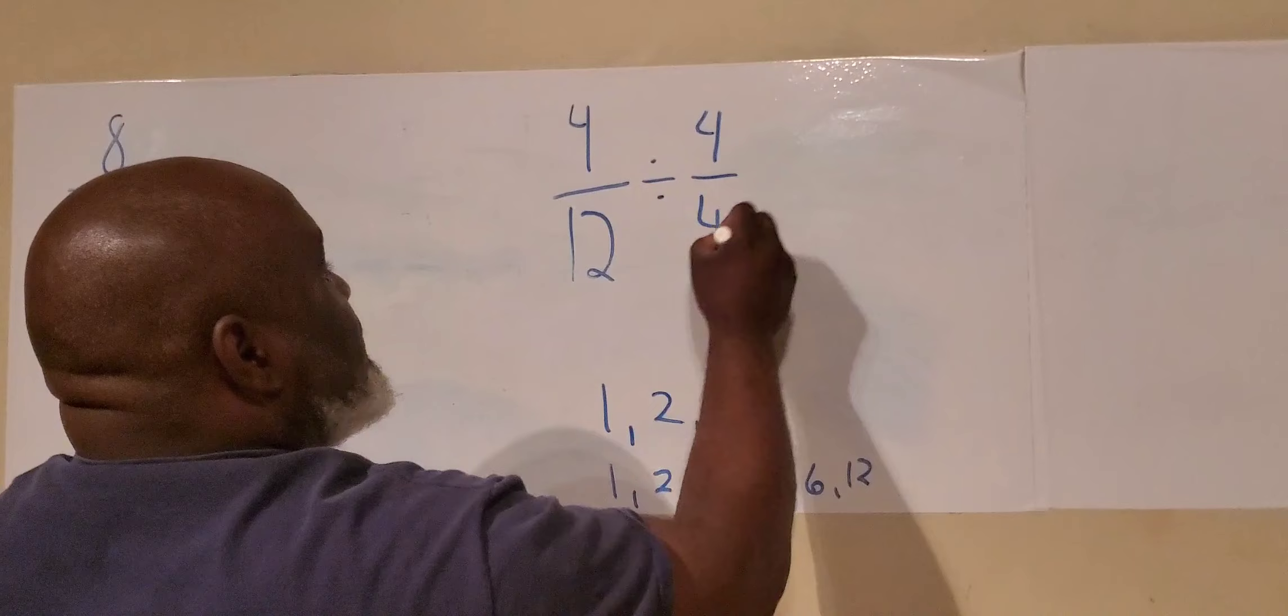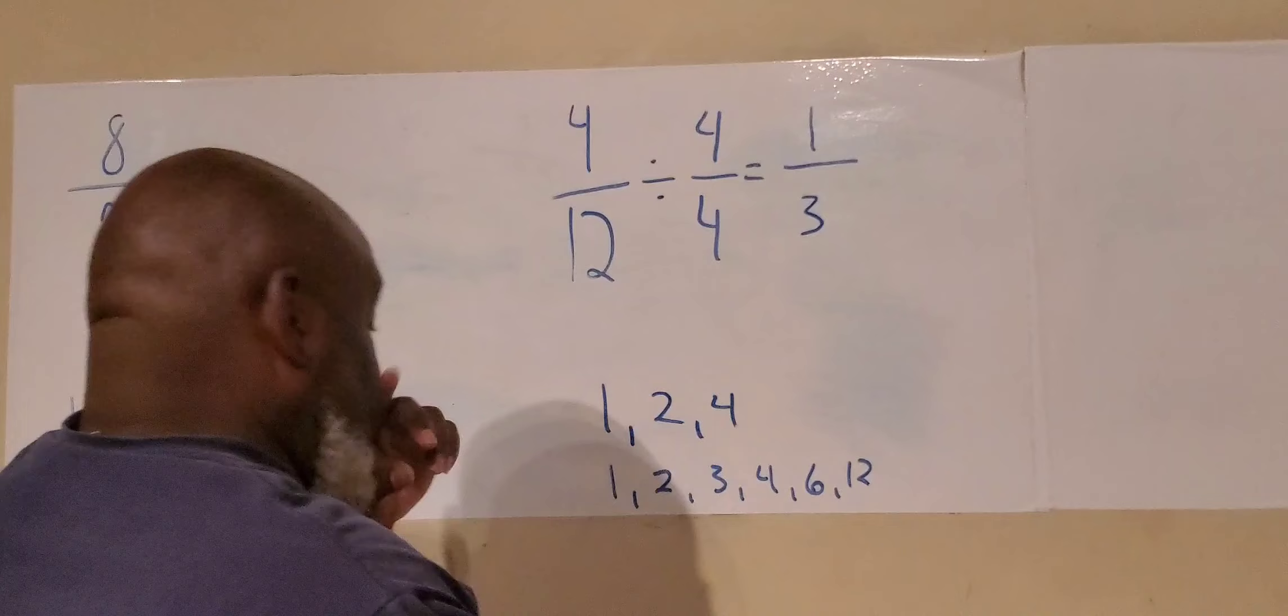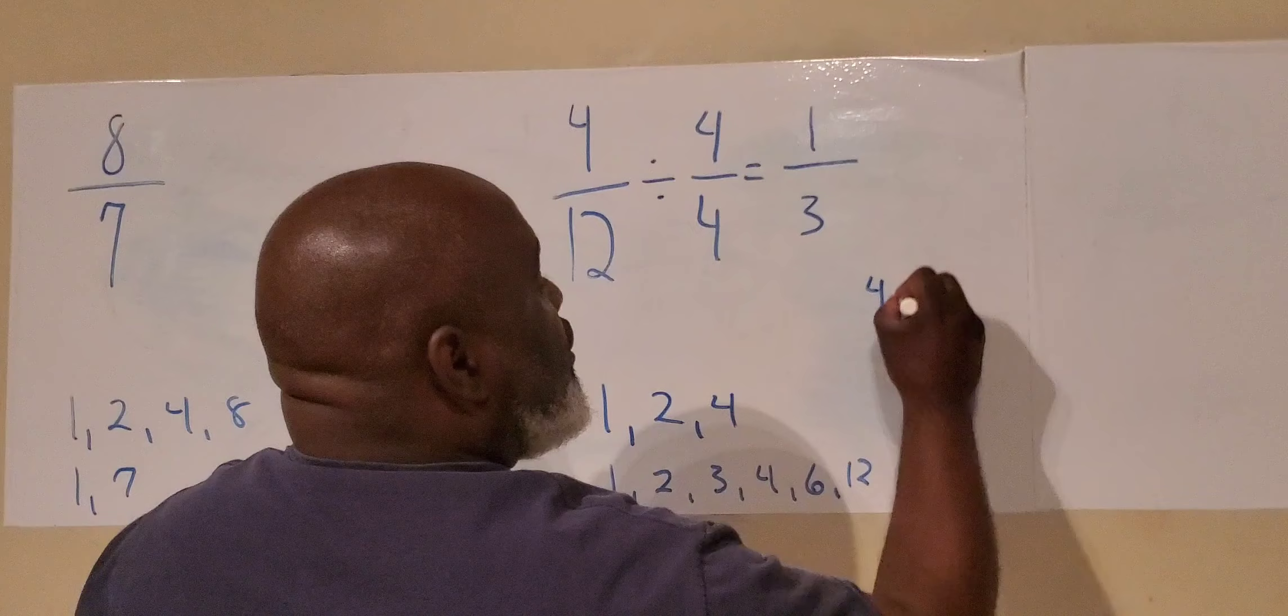Now we have to divide our like terms. Four divided by four, this is step three. Four divided by four is one. Twelve divided by four is three.